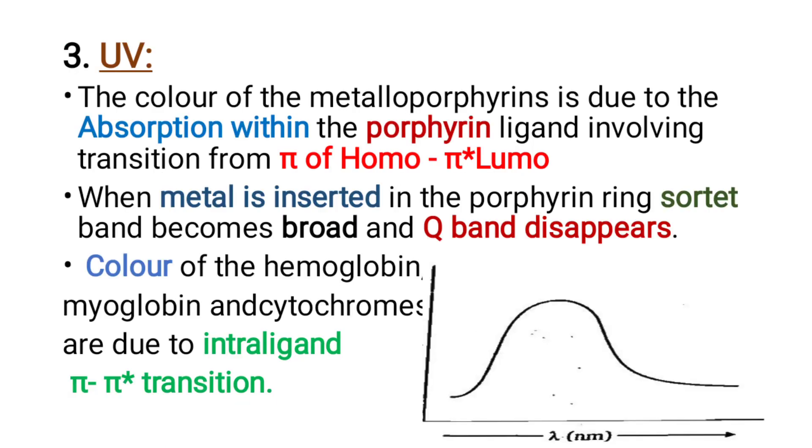Finally, the UV spectrum for metalloporphyrin complex. The color of metalloporphyrin is due to absorption within the porphyrin ligand involving the transition from pi of HOMO to pi star of LUMO. When the metal is inserted in the porphyrin ring, the Soret band becomes broad and the Q band disappears. Finally, the color of hemoglobin, myoglobin, and cytochromes are due to the intraligand pi to pi star transition. Thank you.